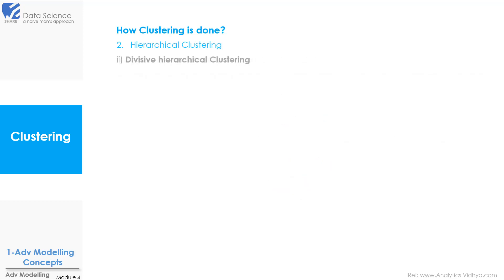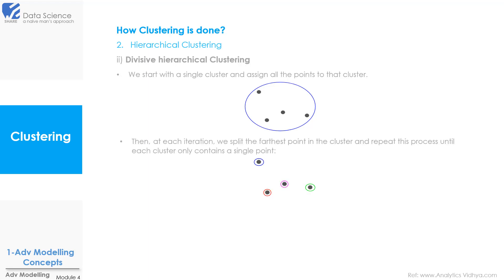Now in divisive clustering we go the other way. We start with a single cluster and assign all the points to that cluster. So we will have only one cluster in the beginning. Then at each iteration we split the farthest point in the cluster and then we repeat this process until each cluster only contains a single point as shown here.